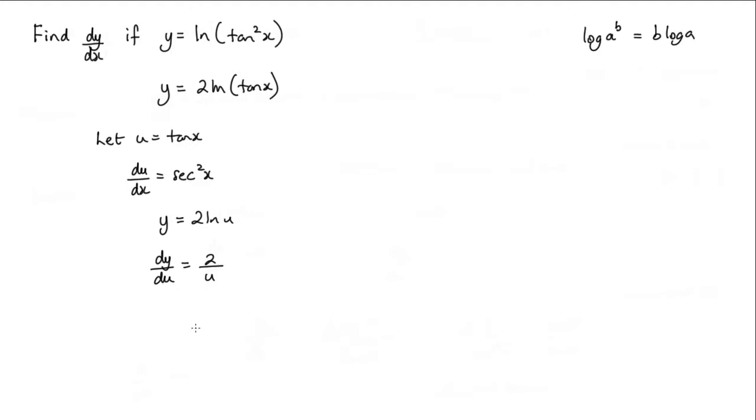Now what we want is dy by dx. So dy by dx is dy by du multiplied by du by dx. So dy by du, that's 2 over u. du by dx is sec squared x.